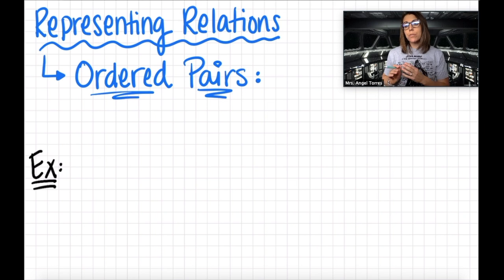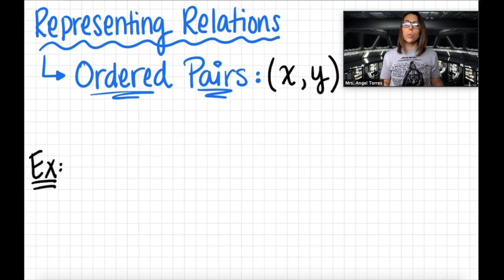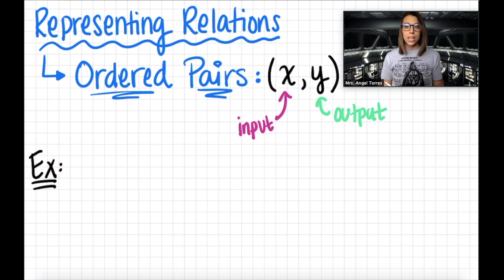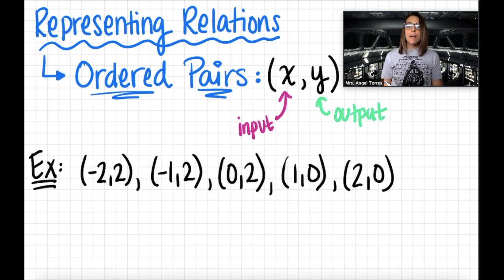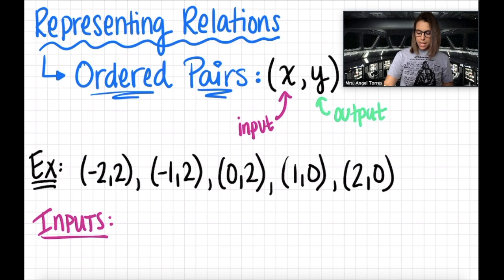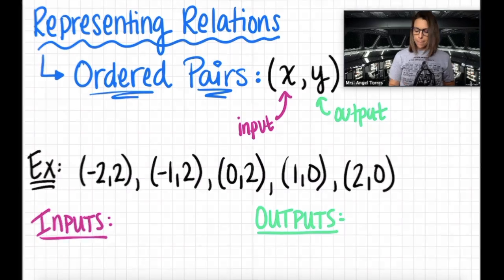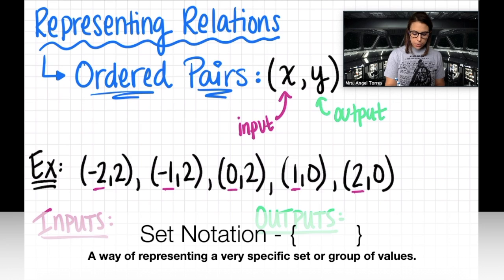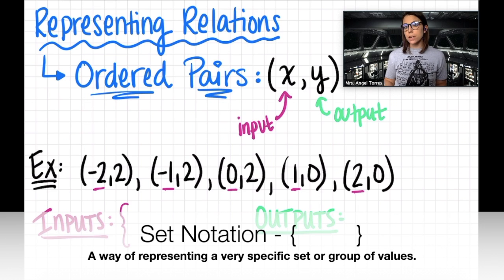In math, you're going to see a lot of different representations of these relations. The first one we're going to get used to is called the ordered pair, or a coordinate X comma Y. Notice that there are parentheses around this — that's showing you this is a very specific relation of input X and output Y. Here I have a set of 5 ordered pairs. Can you give me the inputs and the outputs? My inputs from left to right are negative 2, negative 1, 0, 1, and 2. I'm going to list those out using what's called set notation, which means you use a squiggly bracket, and only those specific numbers are allowed in the set — kind of like an exclusive club for those numbers.